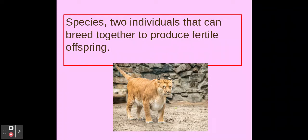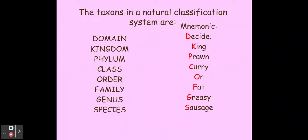This individual in the picture below is a liger — the offspring of a tiger and a lion. A liger is infertile, so what that shows us is that the tiger and the lion are different species; they are not members of the same species. Individuals of the same species can breed together to produce fertile offspring, but a tiger and lion do not produce fertile offspring.